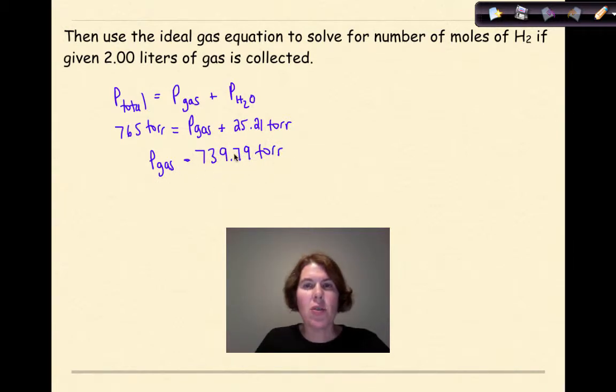What we need to do is we need to solve for number of moles, and moles tells us ideal gas law. So PV equals nRT. The pressure of the gas is what we just solved for, so that's going to be 739.79. The volume is 2 liters.